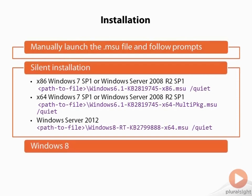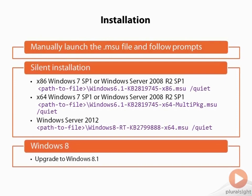If you are running Windows 8 and want PowerShell version 4, you will need to do the upgrade to Windows 8.1. However you want to do your upgrade, then you can get PowerShell version 4.